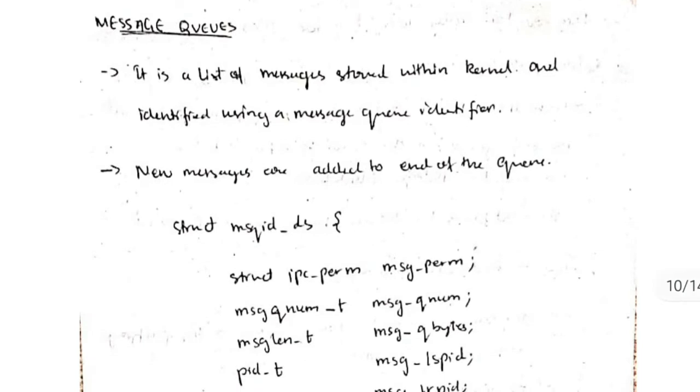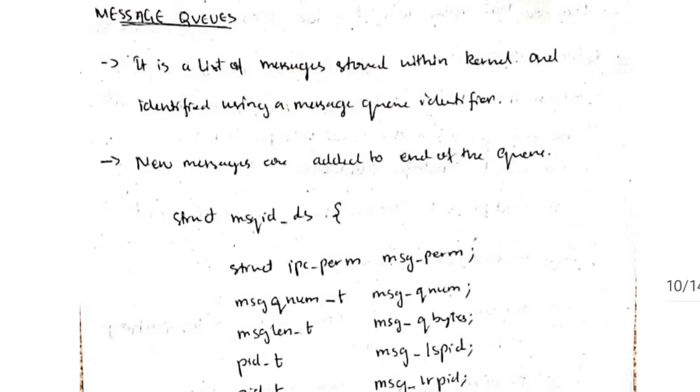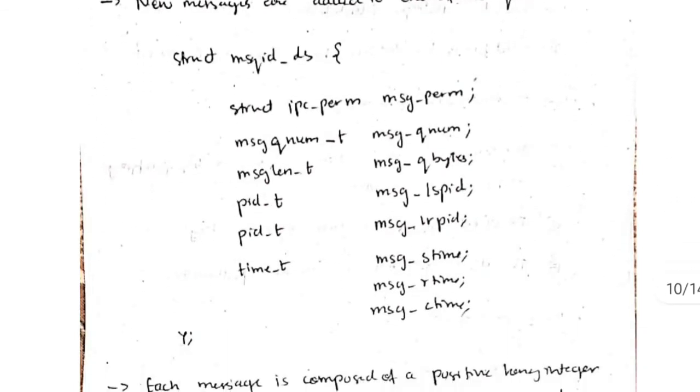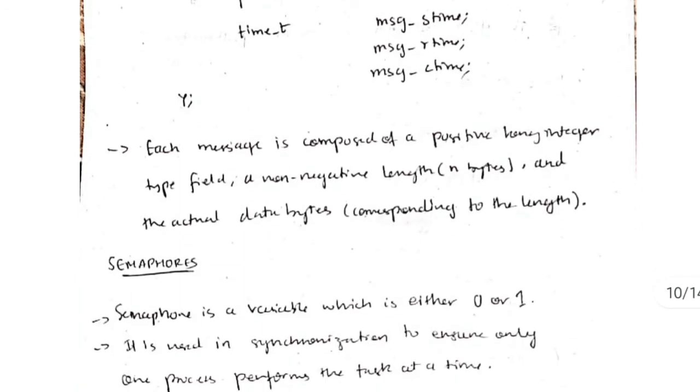Message queues are for storing a list of messages in the kernel, and new messages are added to the end of the queue. Some of the modes of the messages are like permission, queue number, bytes size, IDs, time, and so on. These are the different constants used for identifying the message. Basically, the message has two things: the ID which is a long integer and the data which is the actual command which we have to perform.